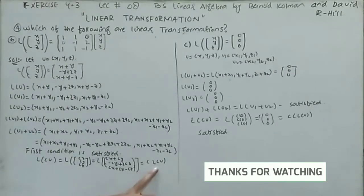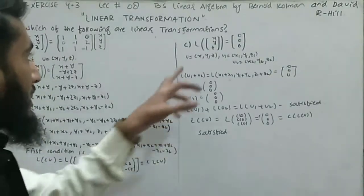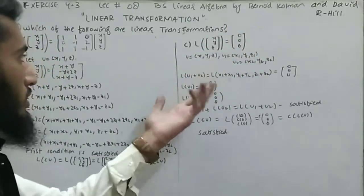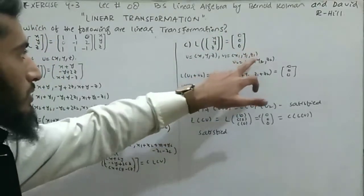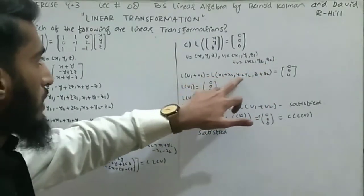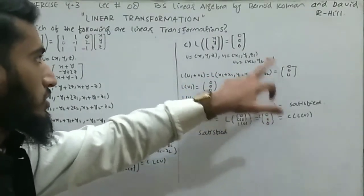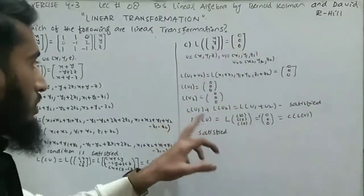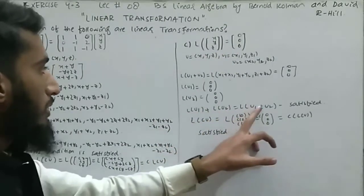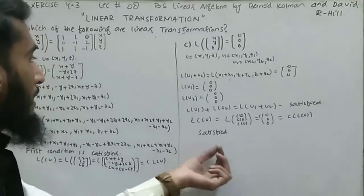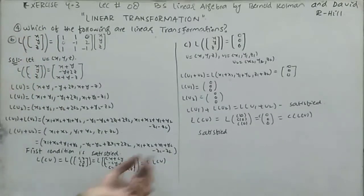Part C: L(x, y, z) = (0, 0, 0). Each term is zero, so this is straightforward. L(u1+u2) = (0,0,0) and L(u1)+L(u2) = (0,0,0)+(0,0,0) = (0,0,0), so the first condition is satisfied. The second condition is also satisfied. Therefore both part B and part C are linear transformations.